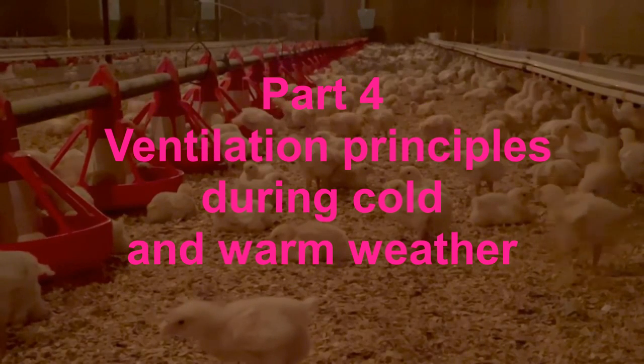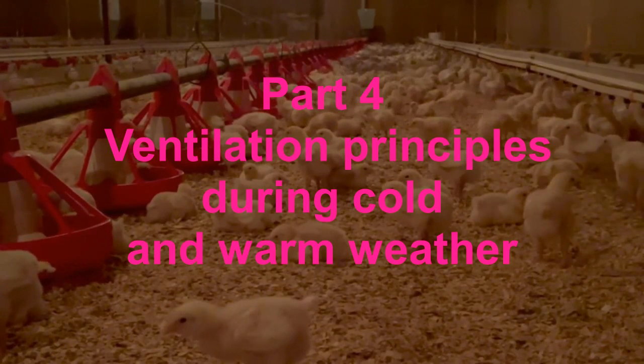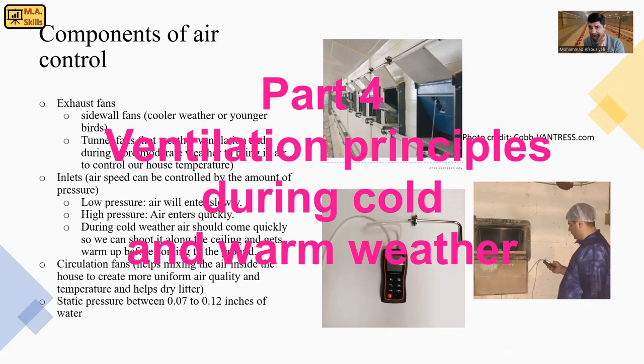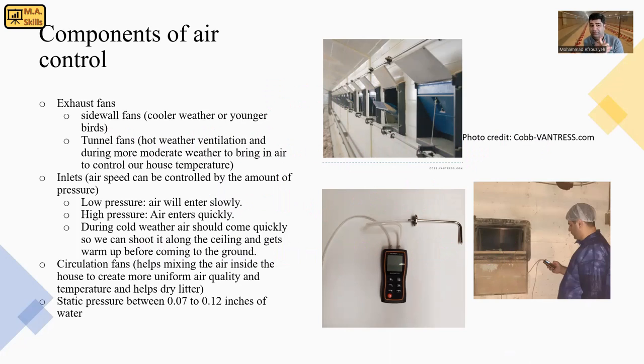We talked about components of air control. We have air inlets and fans - exhaust fans which are responsible to take air out of the barn, and circulation fans in the middle of the barn. Circulation fans help mix the air inside the house to create more uniform air quality and temperature and help keep the litter dry.